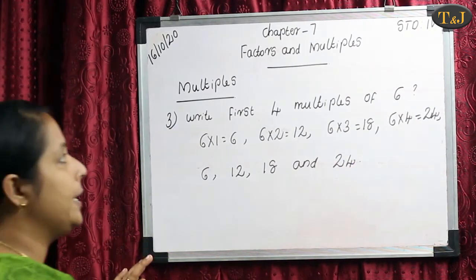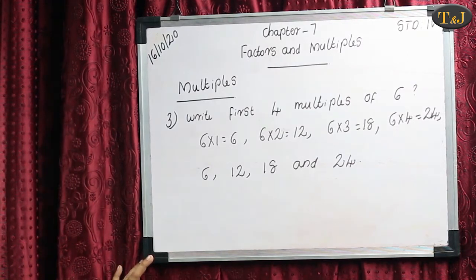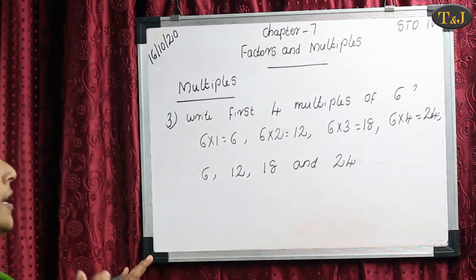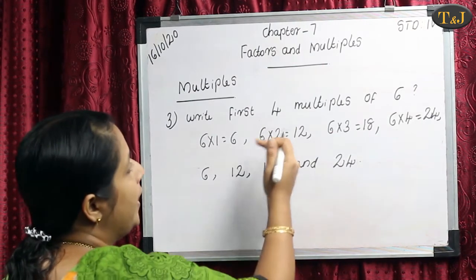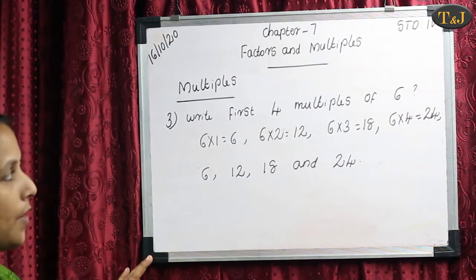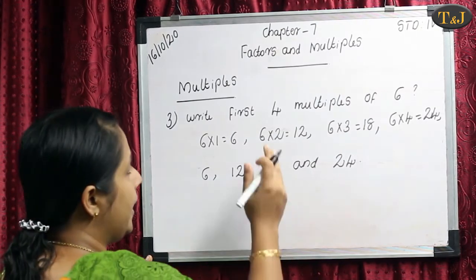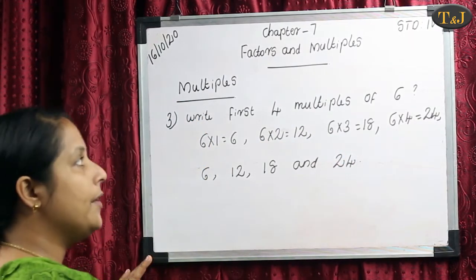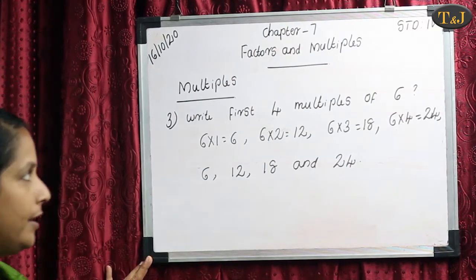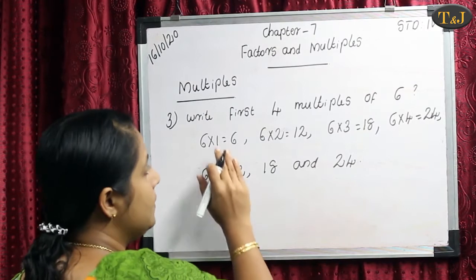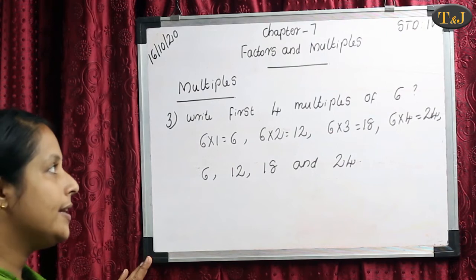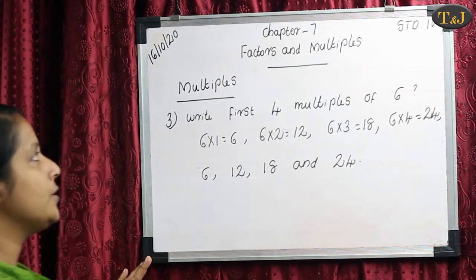So we studied about the term multiples — when we multiply a number by 1, 2, 3, 4, 5, etc., its result is known as its multiples. In the examples, we found 4 multiples, 5 multiples, and 10 multiples by multiplying the given number that many times. I hope all of you understood this heading: Multiples.